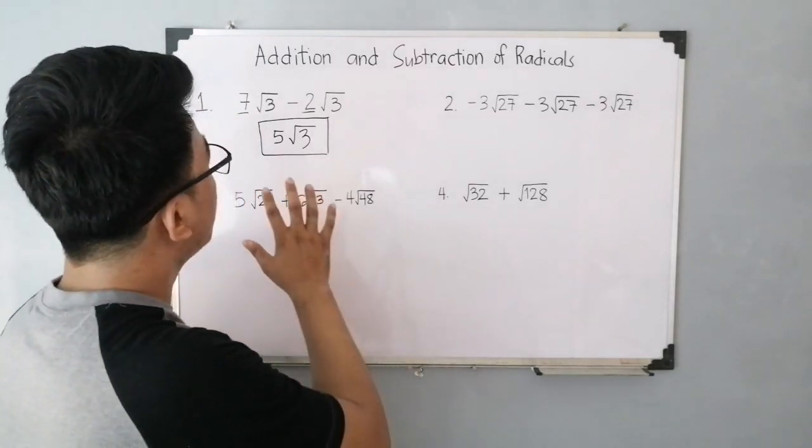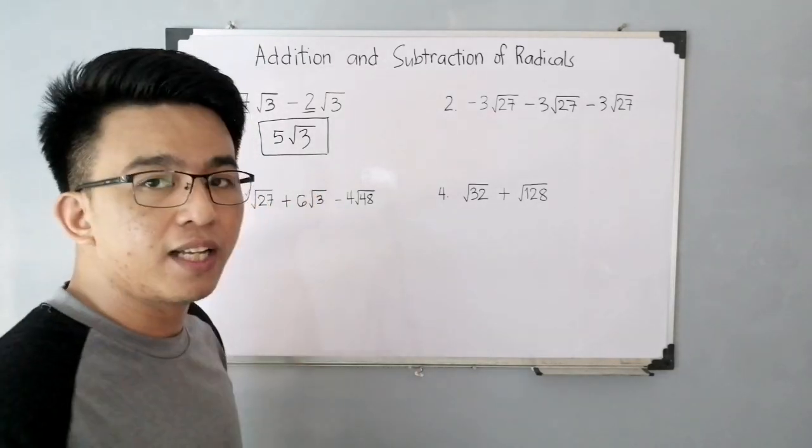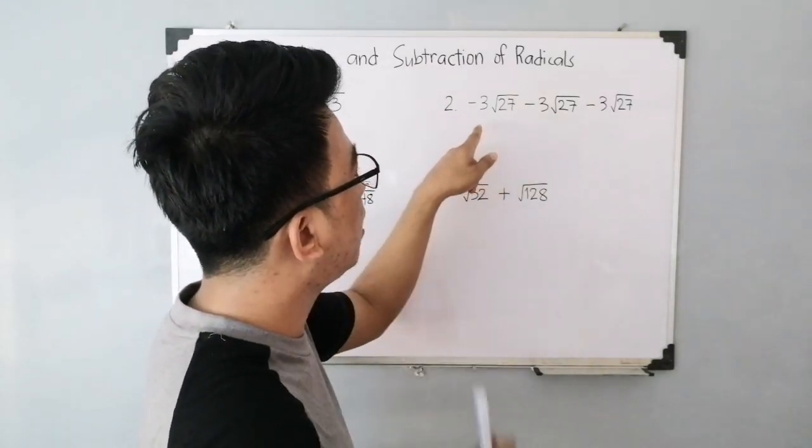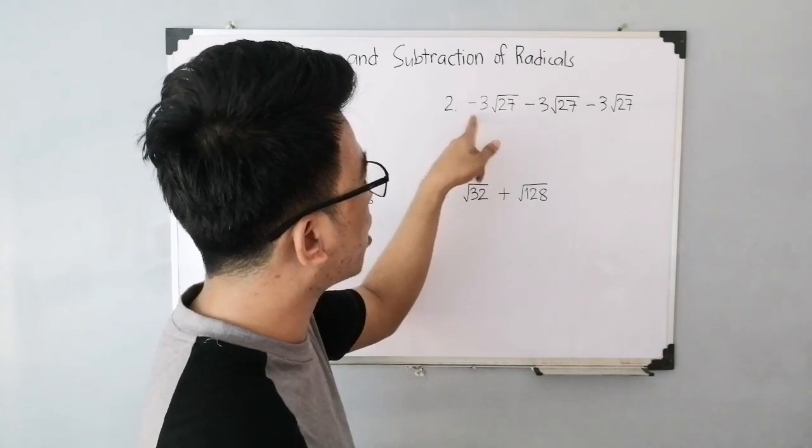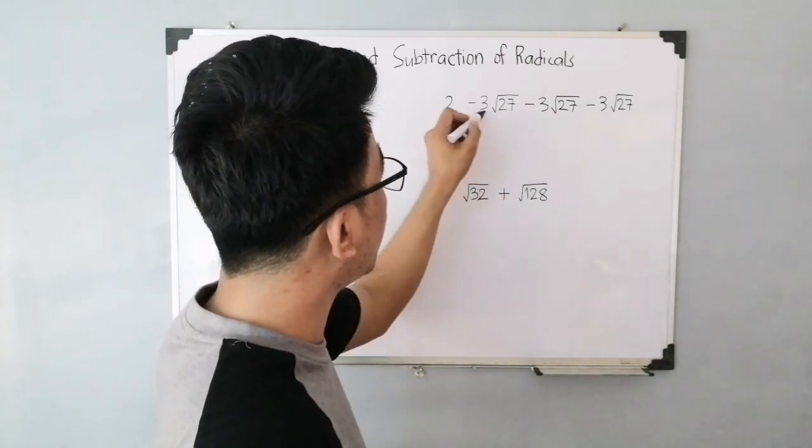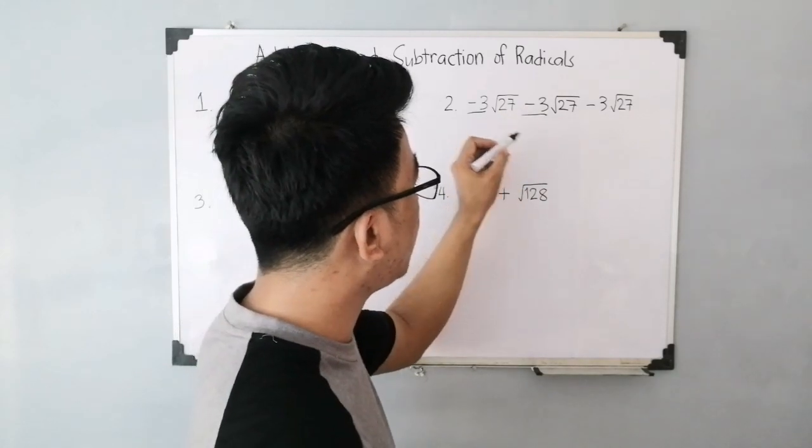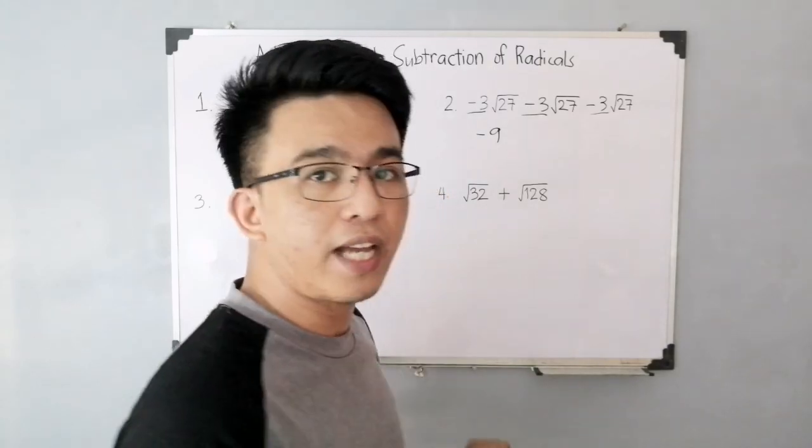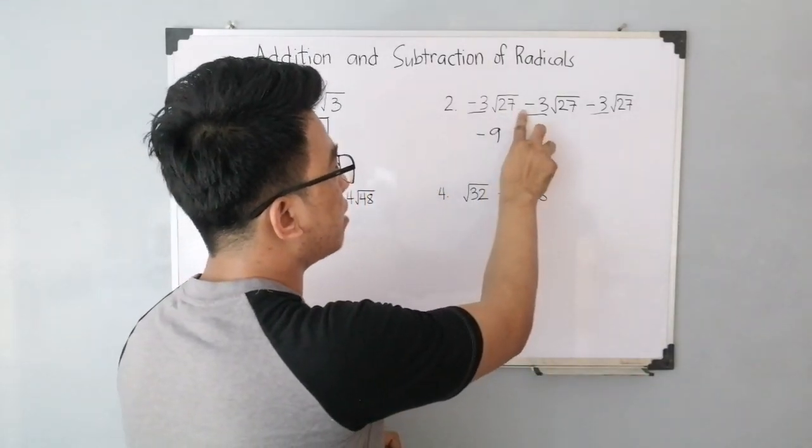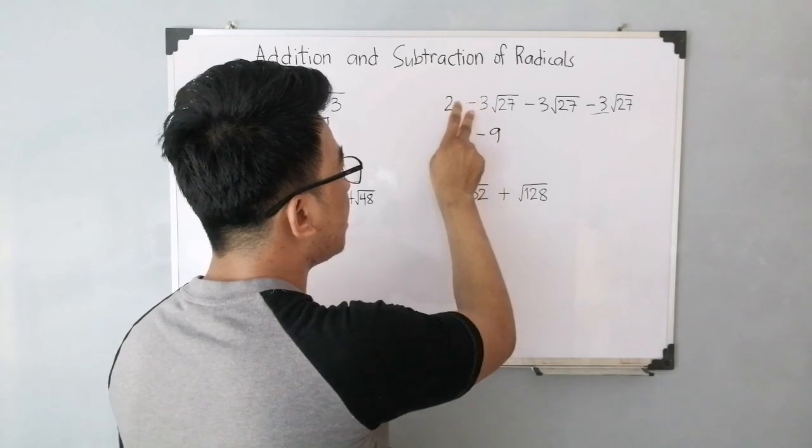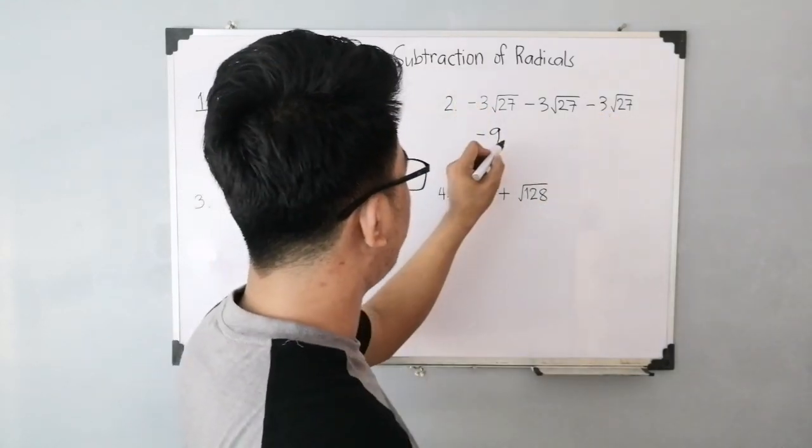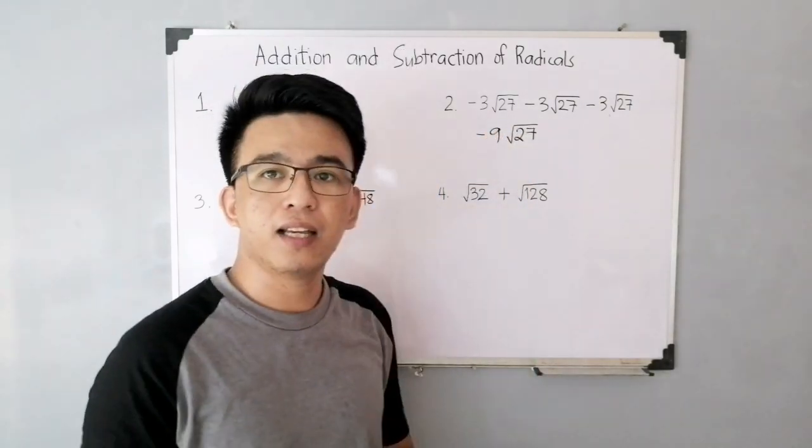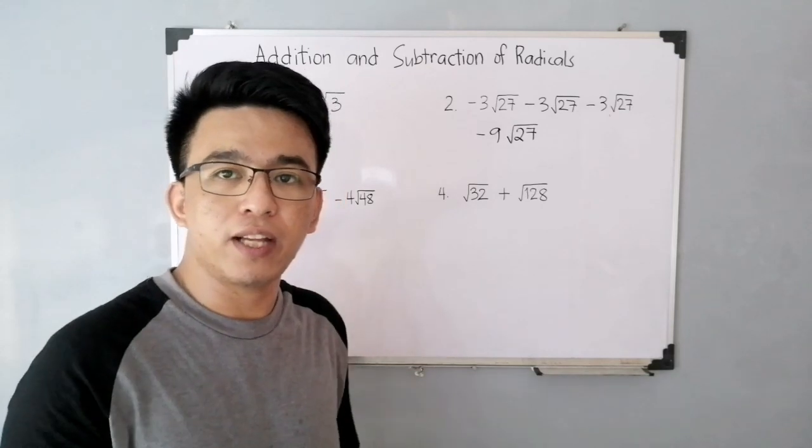We can still simplify 27 since it has a factor that is a perfect square. But let's do that later. So, applying the rule of adding or subtracting radical expressions, first let's add the coefficients. We have negative 3 plus negative 3 plus negative 3 plus negative 3. That will give you a coefficient of negative 9. And since we have a common radical of 27, we can easily copy square root of 27.